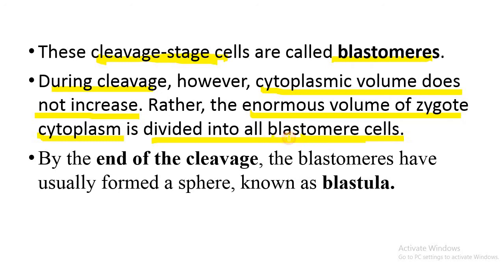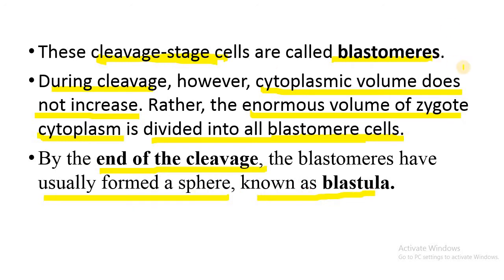Each blastomere will have the cytoplasm of the zygote distributed into it. By the end of cleavage, the blastomeres have usually formed a sphere known as the blastula.